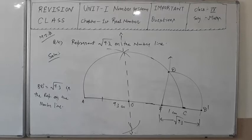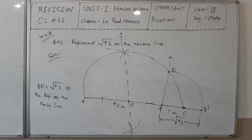I hope you understood it very well. We have represented √9.3 on the number line. There is also a similar example: represent √4.5 on the number line, which follows the same method. I am taking many more similar questions.